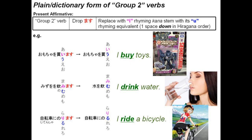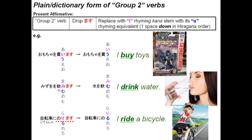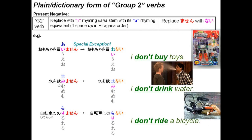Nomimasu — again we have ma-mi-mu-me-mo, so mi goes down to mu and nomimasu becomes nomu. Norimasu — we have ra-ri-ru-re-ro, ri goes down to ru and norimasu becomes noru.